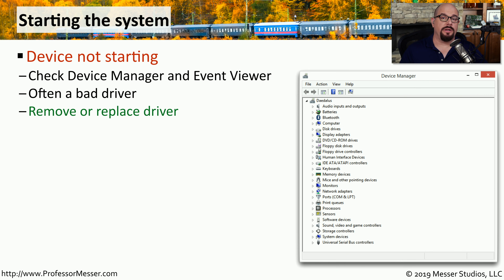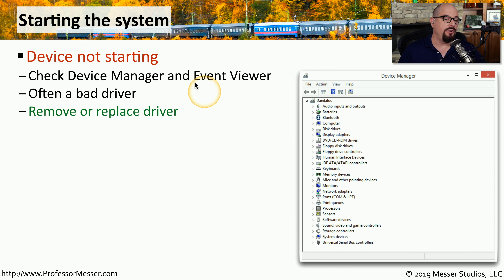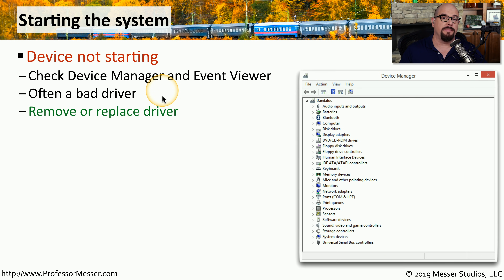If your operating system is starting but a piece of hardware is giving you a problem, you may see that a device is not starting. Check Device Manager to see what hardware may not be communicating properly with the OS, and get more details about the error in Event Viewer. If the hardware appears to be working, the issue may be the driver — you can remove or replace the driver, have the OS reinstall it automatically, or manually reinstall it, then restart the system to see if it communicates properly with the hardware.